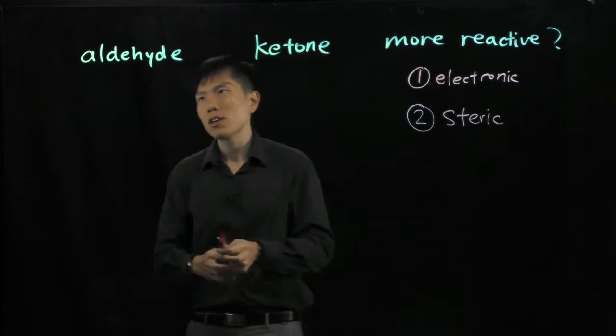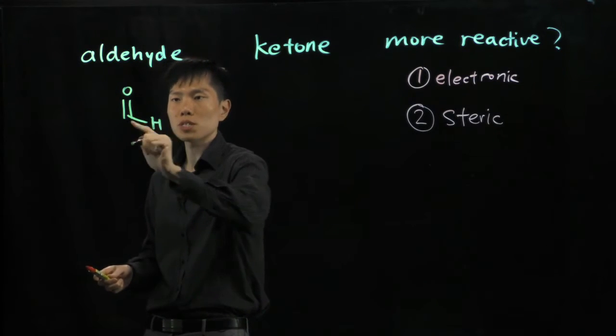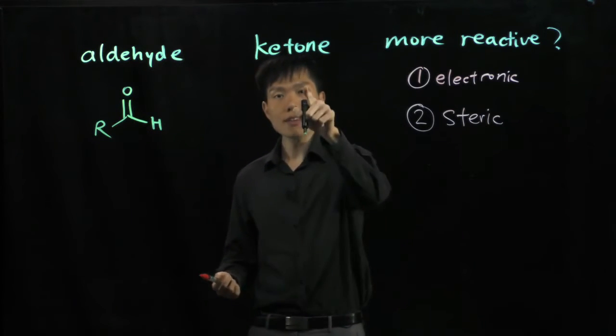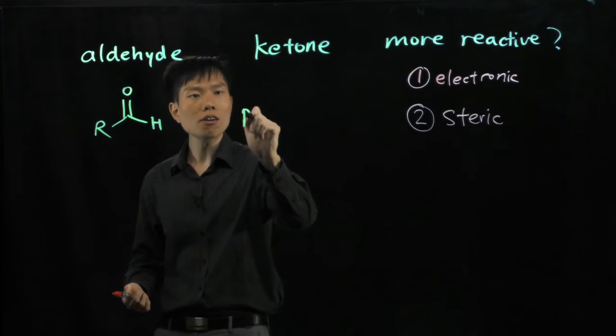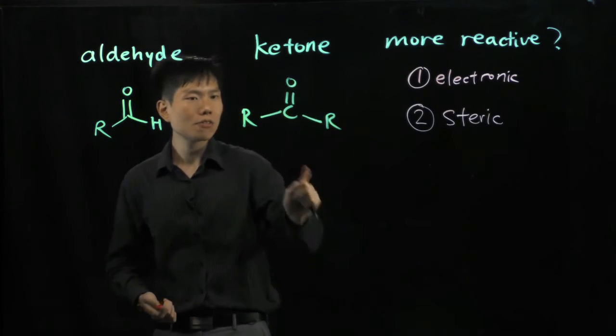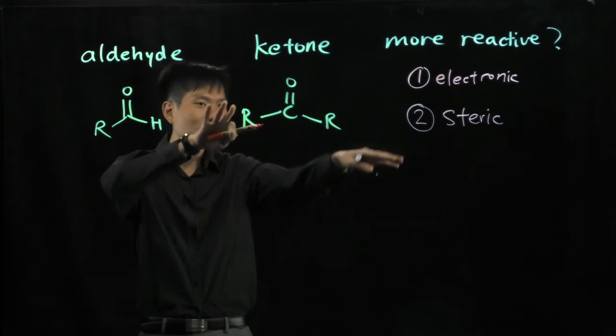If I draw an aldehyde, we know that you must have this functional group C double bond O H, and this is R group, an alkyl chain. And for the ketone we have R, CO double bond, and R. Of course these two R's don't have to be the same, but we know that they're just long wavy alkyl chains.